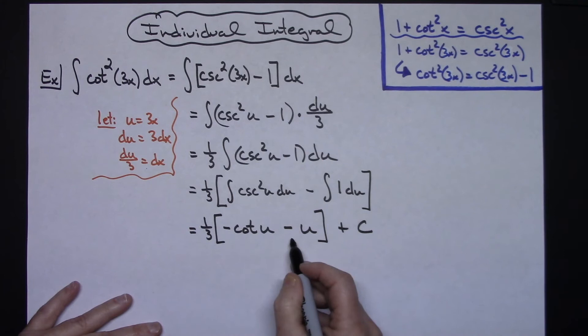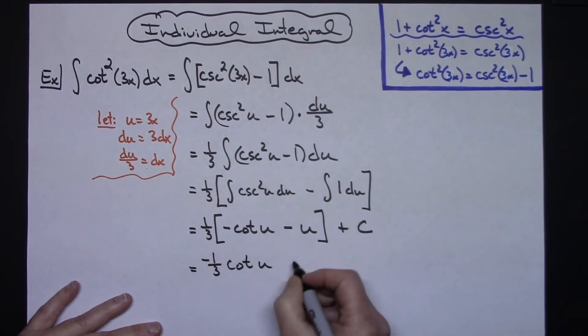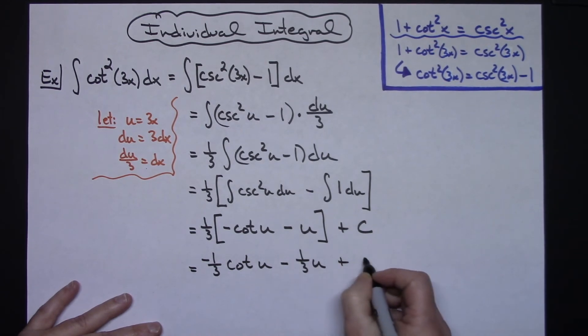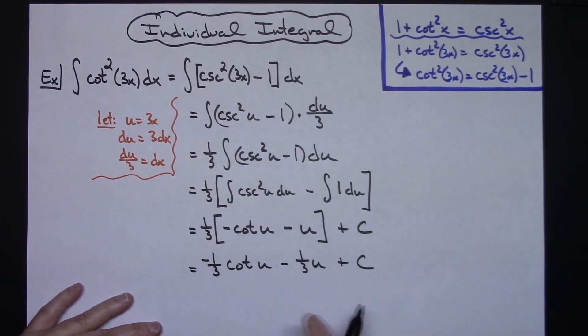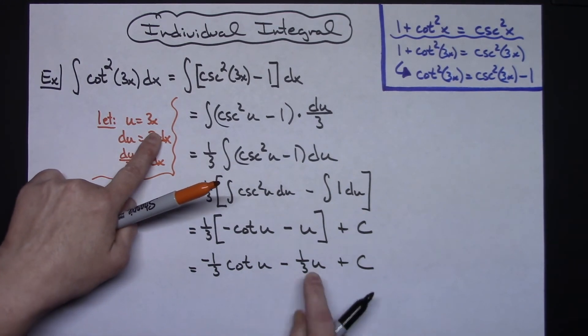Distributing the 1/3, I'm going to then have a, with that negative out in front, a negative 1/3 cotangent u, negative, so minus 1/3 u plus C.